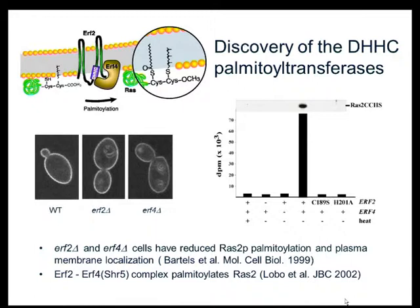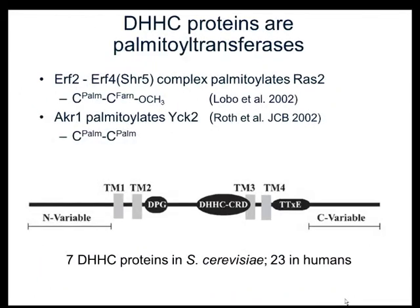In independent work, Nick Davis, then at Wayne State University, showed that another protein with a DHHC cysteine-rich domain, AKR1, was capable of palmitoylating the substrate yeast casein kinase 2. What ERF2 and AKR1 had in common was this DHHC cysteine-rich domain, suggesting it was a palmitoyltransferase domain. Both proteins are integral membrane proteins, though ERF2 requires a second binding partner, ERF4. Interestingly, ERF4 had been identified in a prior screen as SHR5 and was linked to RAS palmitoylation, but the mechanism was never determined — work done by Scott Powers' group.